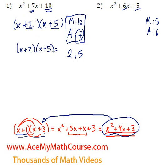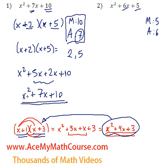If we decided to expand it just to check, we can do that. x times x is x squared, x times 5 is 5x, 2 times x is 2x, and 2 times 5 is 10. We can combine like terms. We get 7x. And look at that, we were right. x squared plus 7x plus 10 is x plus 2 times x plus 5.